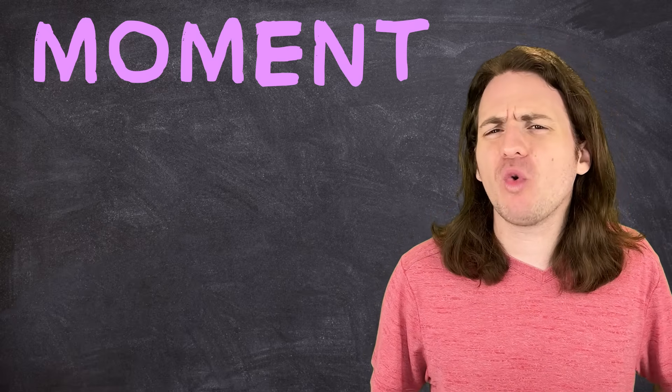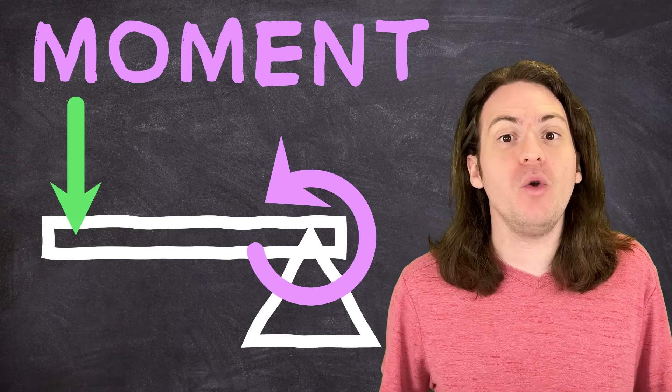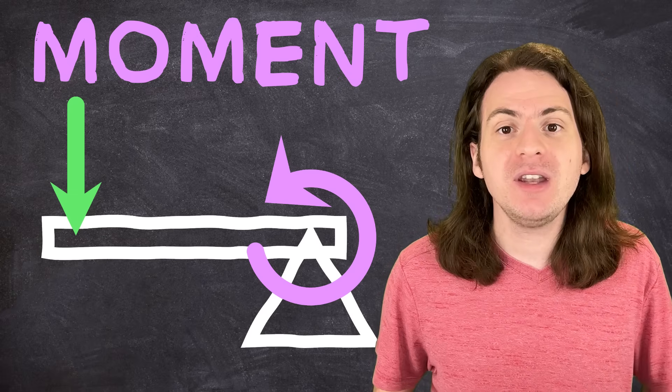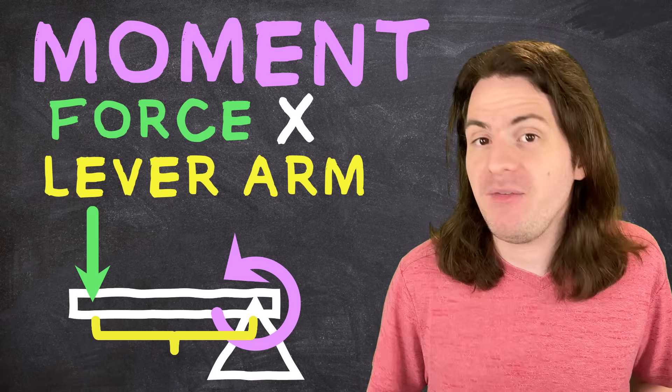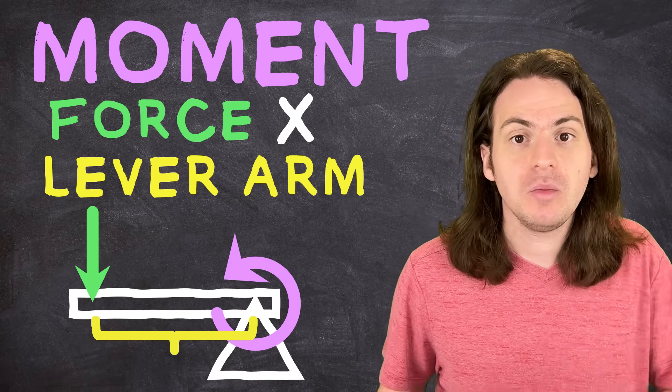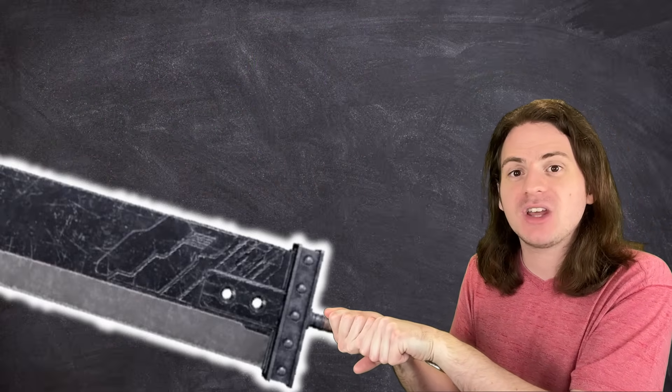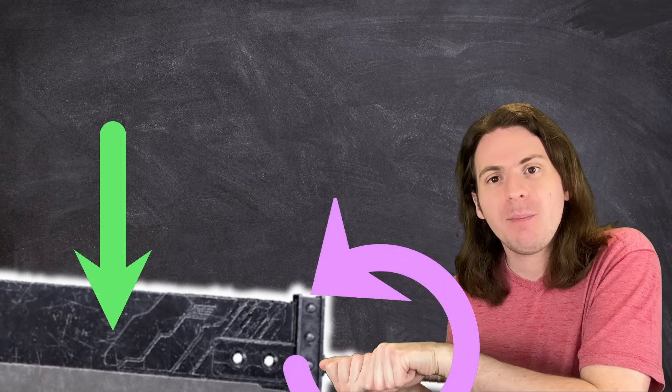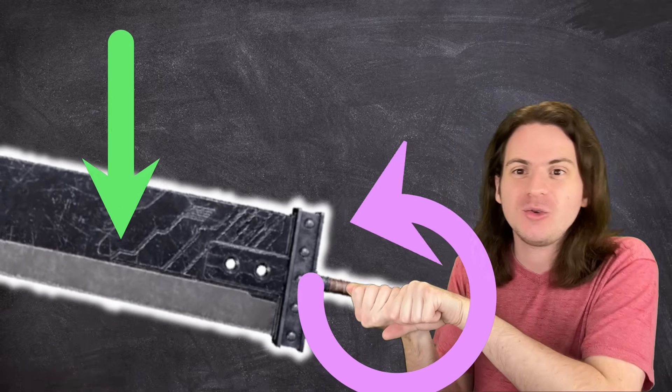True, they weigh the same, but one is going to require a much greater force to lift. This is due to something called a moment. Think of a moment as the rotational equivalent of a force. So a force makes things move in a line, while a moment makes them move in a circle. And you can calculate the moment by multiplying the force applied to an object by the distance to the pivot point, which in this case would be your hands.